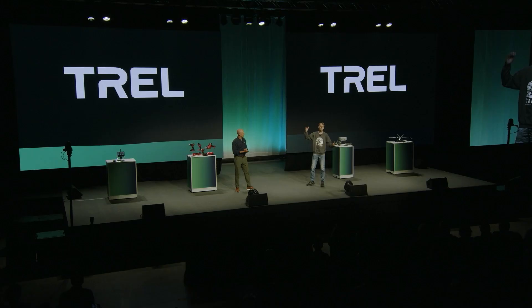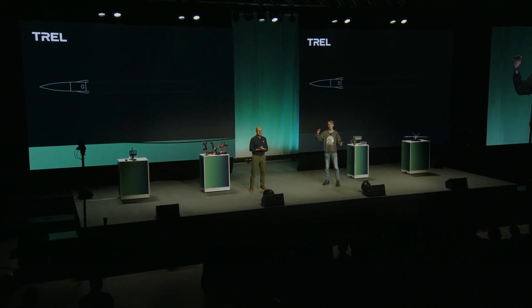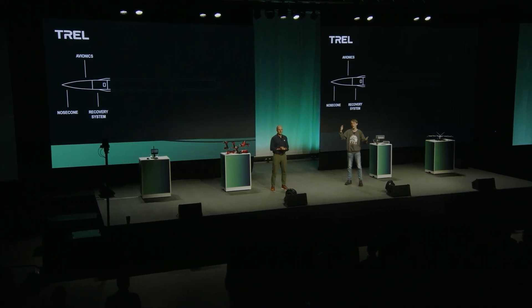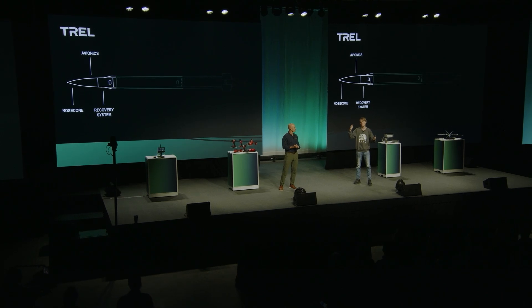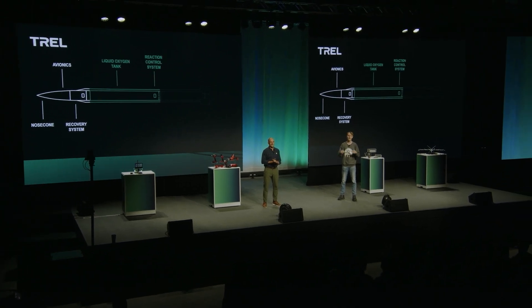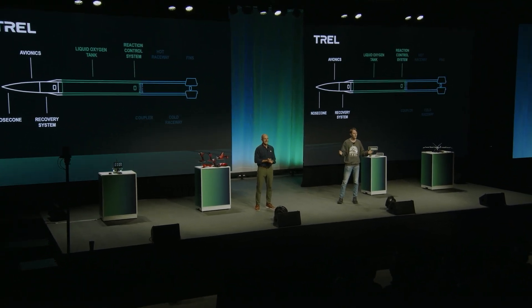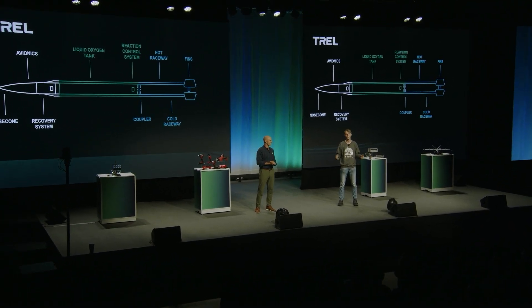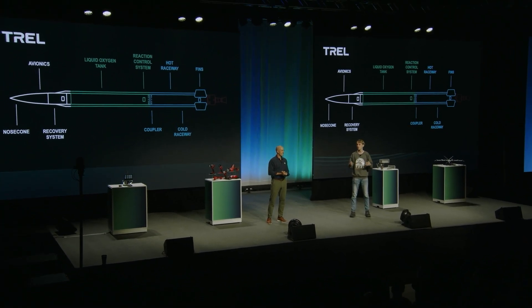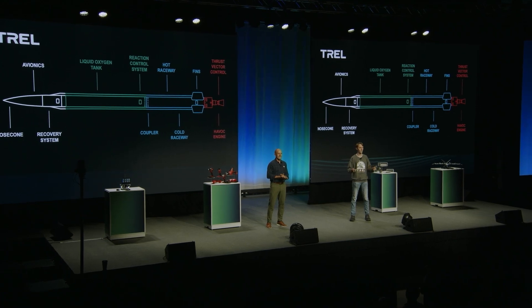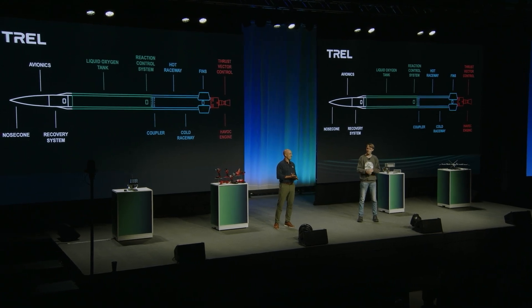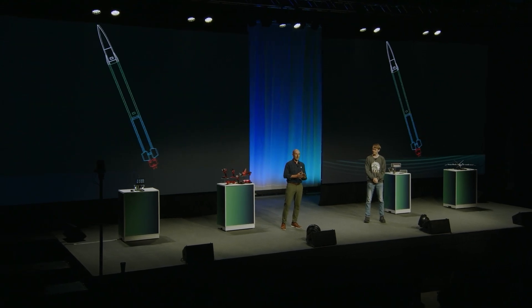This is a 26-foot-tall rocket that is the largest and most powerful statically-fired bi-propellant collegiate rocket ever. It has 3,500 pounds of force at liftoff, and it's powered by a regeneratively cooled, pressure-fed Havoc engine. That is awesome.